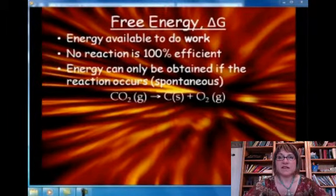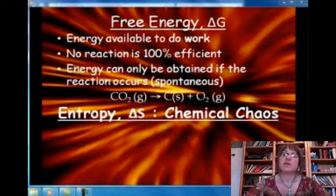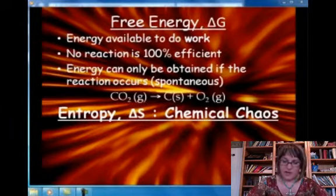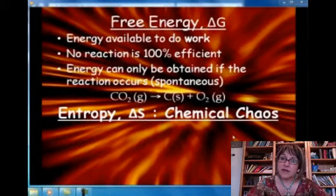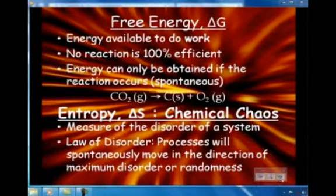How do we decide if a process is spontaneous or not? One factor to consider is entropy — basically chemical chaos. In any system, we want to describe how much chaos there is. In this system, gas particles are turning into products that are solid and some that are gas. Gases move really fast — about 500 meters per second at normal room temperature — and they collide about a billion times a second, so gases have a lot of chaos. A solid has an inherent structure and order, so increasing order means decreasing entropy.